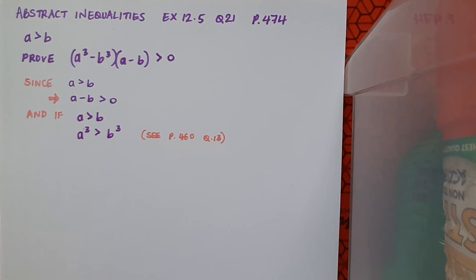And of course, if a cubed is greater than b cubed, well then this implies that a cubed minus b cubed is also greater than zero. And that's my other bracket in the statement that I'm trying to prove.